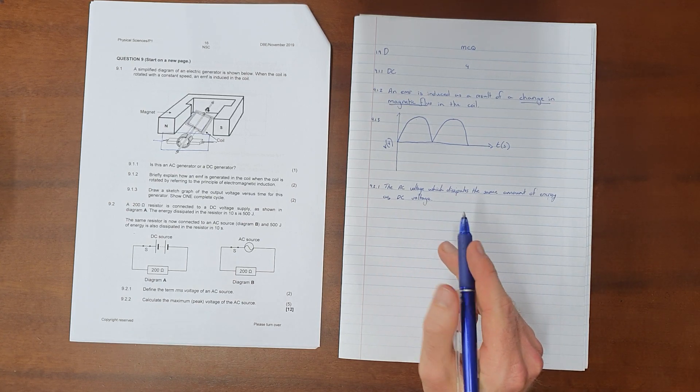Question 9.2.1: Define the term RMS voltage of an AC source. RMS voltage means the AC voltage which dissipates the same amount of energy as a DC voltage supply. Essentially, RMS refers to the equivalent direct current. The RMS voltage of any AC source is the equivalent you would get from a DC source - it's the AC voltage that dissipates the same amount of energy as a DC voltage supply.